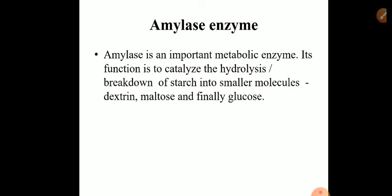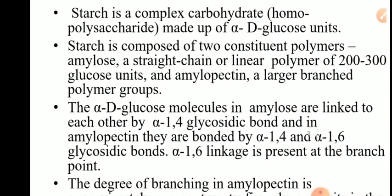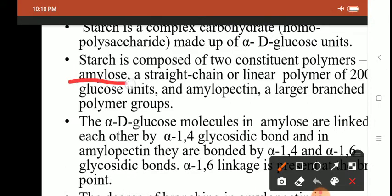Starch is made up of glucose. Starch is a homopolysaccharide — actually it is made up of alpha-D glucose units. Starch is composed of two polymers: amylose, which is a straight chain or linear polymer, and amylopectin. Amylopectin is a branched polymer. So starch is made up of amylose and amylopectin. Both amylose and amylopectin are made up of alpha-D glucose units.